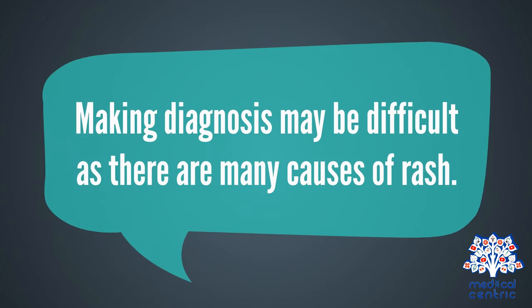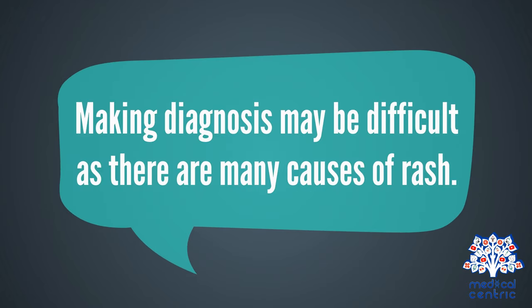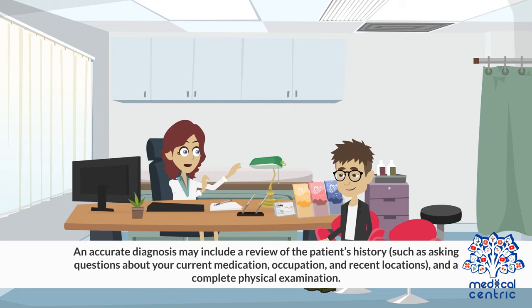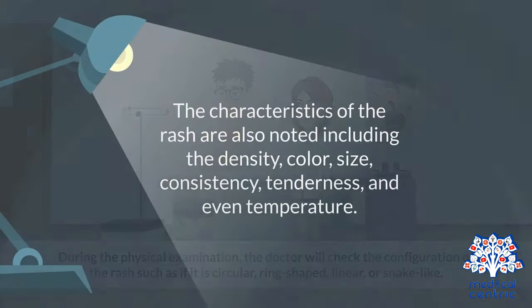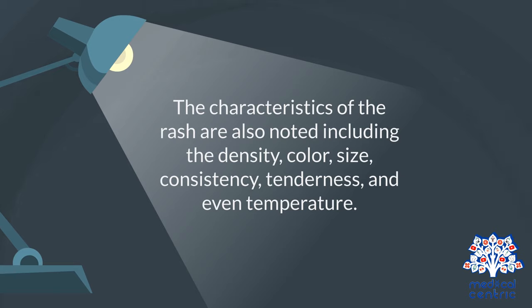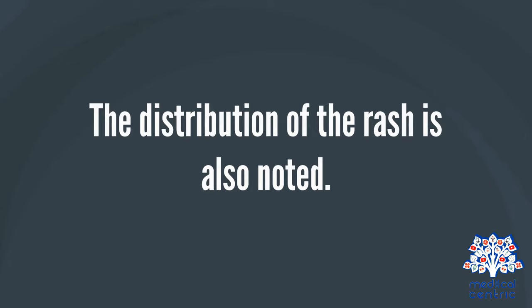Making a diagnosis may be difficult as there are many causes of rash. An accurate diagnosis may include a review of the patient's history, such as asking questions about current medication, occupation, and recent locations, as well as a complete physical examination. During the physical examination, the doctor will check the configuration of the rash — such as if it is circular, ring-shaped, linear, or snake-like — and note the characteristics including density, color, size, consistency, tenderness, and temperature. The distribution of the rash is also noted.